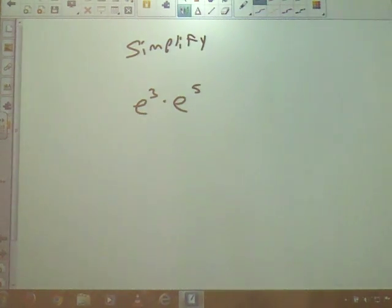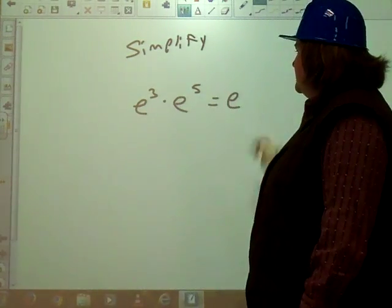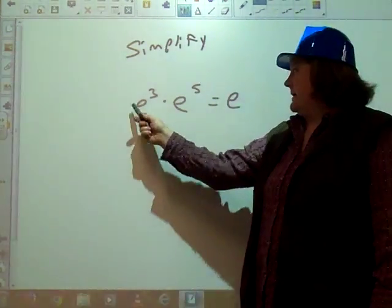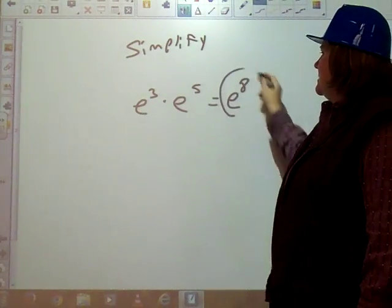We know when we have the same base, this is our exponent rules, when we have the same base and we're multiplying, we keep that base and we just add our exponents. So e to the three plus five, so our final answer is going to be e to the eighth.